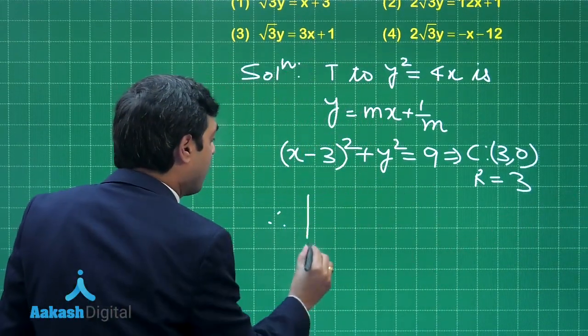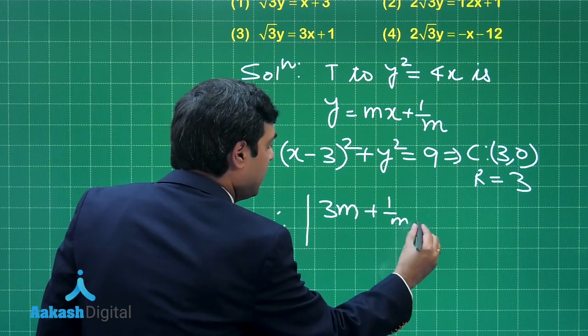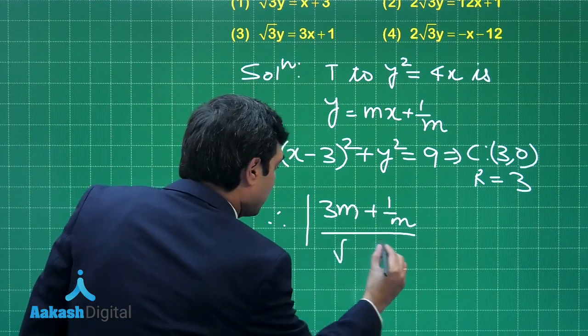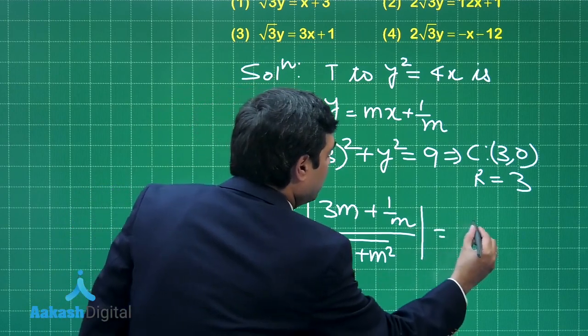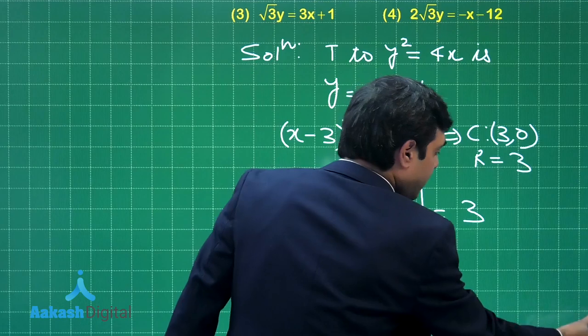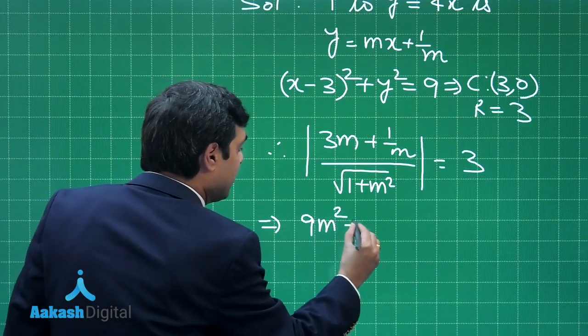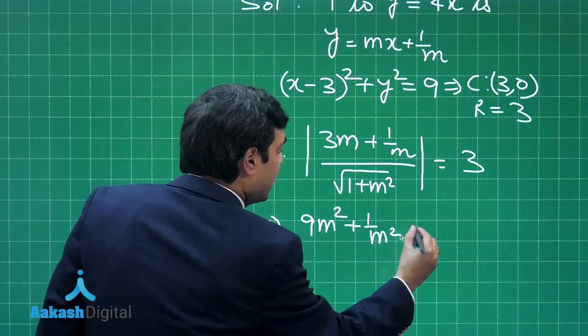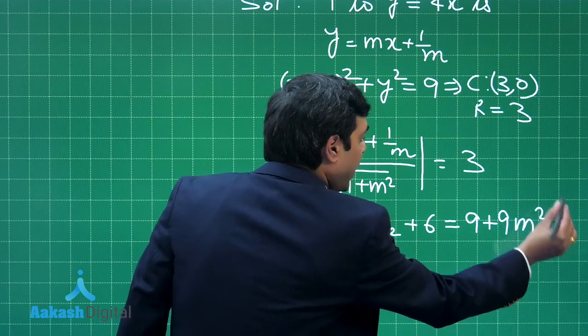Therefore, |3m + 1/m| / √(1 + m²) = 3. Squaring both sides and simplifying, we have 9m² + 1/m² + 6 = 9 + 9m².